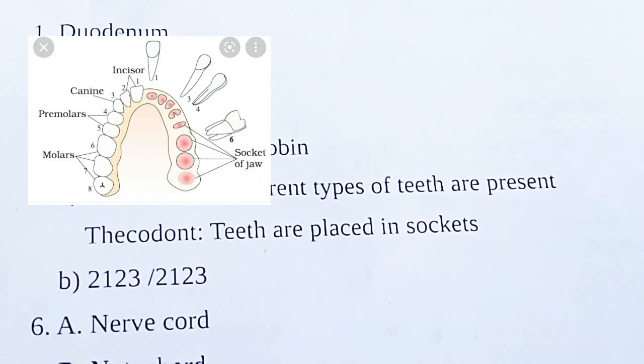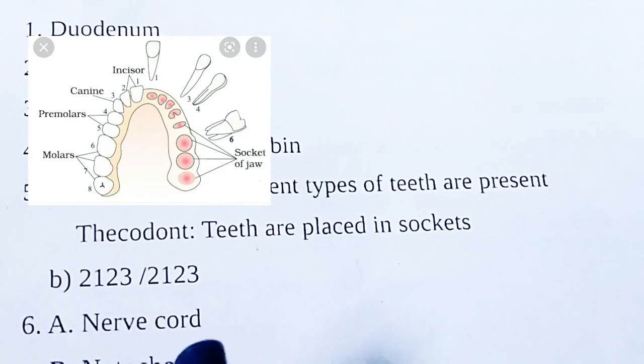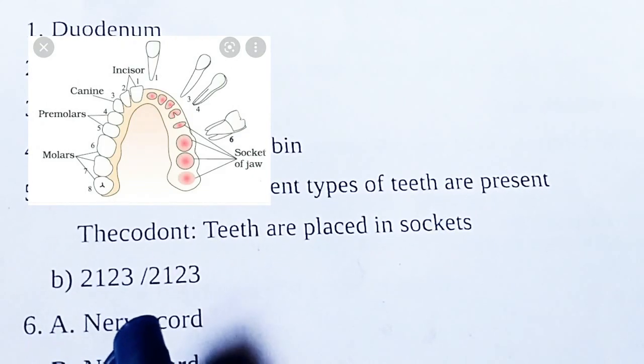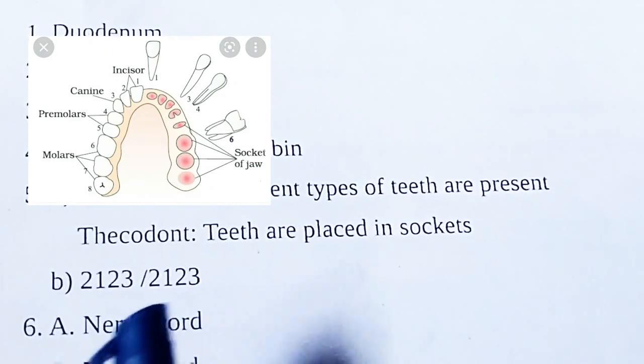The dental formula for thecodont dentition is 2, 1, 2, 3 — meaning 2 incisors, 1 canine, 2 premolars, 3 molars.